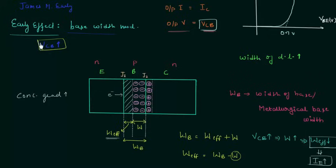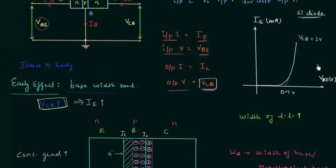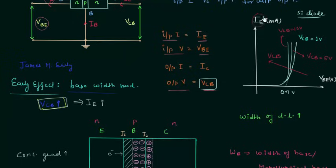So we can say that on increasing VCB, the output voltage, the input current IE will increase. The final characteristics including the effect of VCB will look like this — the current IE increases with increase in VCB. This plot is for VCB equal to 5 volts and this plot is for VCB equal to 10 volts. So with increase in VCB, the input current IE will also increase. The remaining characteristics are similar to the forward bias characteristics of PN junction diode.